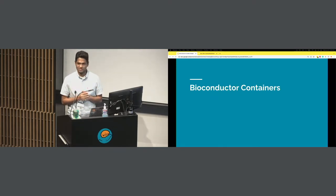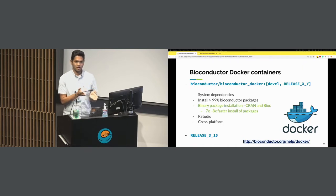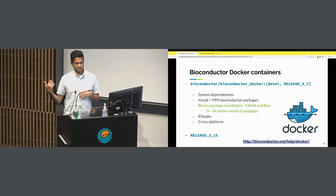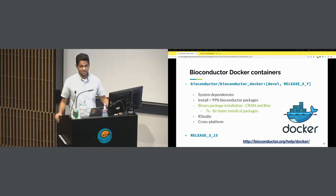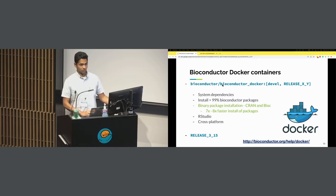Jumping back into the slides, we'll switch to the next piece of the puzzle: Bioconductor containers. Bioconductor produces Docker containers available on Docker Hub. They're called bioconductor/bioconductor_docker. We have many releases available — everything from release 3.11 is available on Docker containers for Bioconductor. The latest release is 3.15, and the DEVEL image for Bioconductor 3.16 is tagged 'devel'.